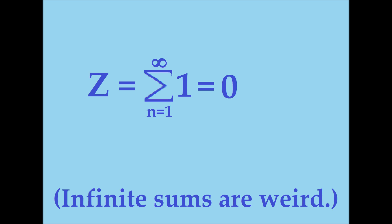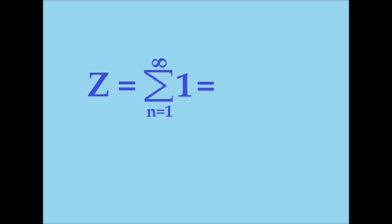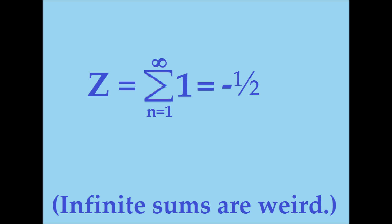Hey there, innerwebs. Earlier this week, I facetiously uploaded a video making the erroneous claim that the sum of an infinite string of ones is equal to zero. That is not true, and I knew that at the time — it was a joke. The actual value of the sum of an infinite string of ones is negative one-half. Ha! Zero's not looking so dumb now, is it?